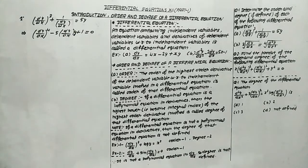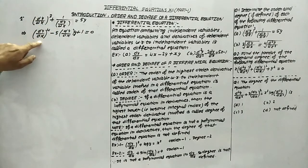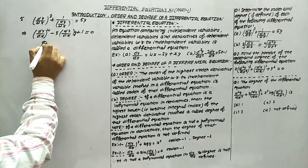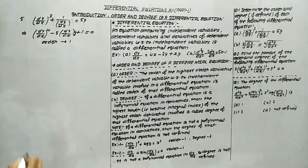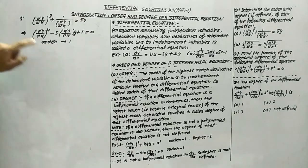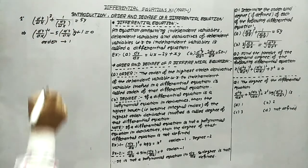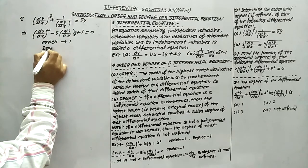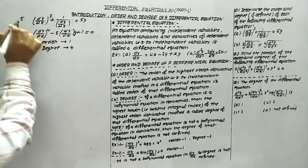This is our simplified differential equation. The highest-order derivative is dy/dx, therefore the order of this differential equation is 1. The highest power of dy/dx is 4, so the degree of this differential equation is 4.